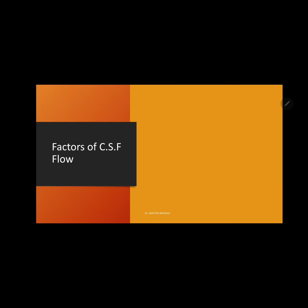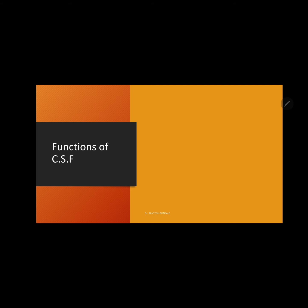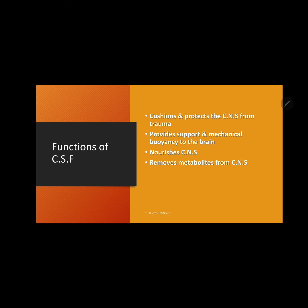Factors responsible for the flow of CSF include pulsation of the cerebral and spinal arteries, movements of the vertebral column, respiration and coughing, and changes in position. The functions of CSF are: it cushions and protects the CNS from trauma; it provides support and mechanical buoyancy to the brain so it weighs less; it nurses the entire CNS; it removes metabolites from the CNS; and it acts as a reservoir and regulates the contents of the skull.